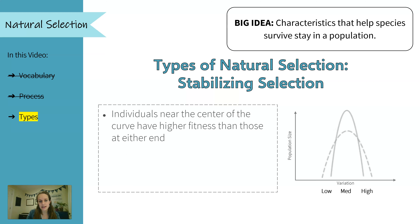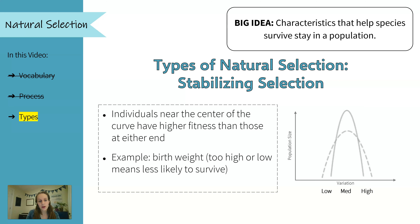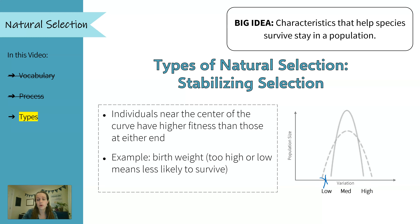Our next type is stabilizing selection. This is when individuals near the center of the curve have higher fitness than those at either end. Again, our dotted line is our starting point. And our example for this is birth weight in wild horses. So if a baby horse is born with a really, really low birth weight, it is unlikely to survive. And if a baby horse is born with a really high birth weight, it might kill or hurt the mom.